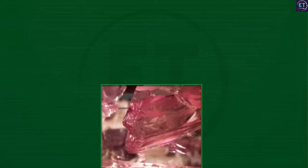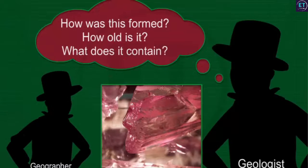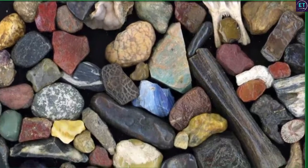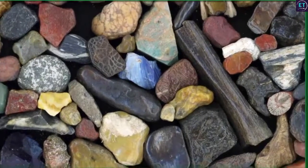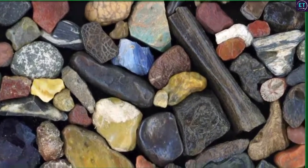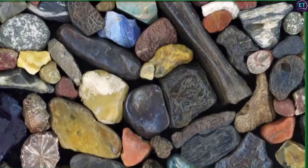Minerals are of interest to both geographers and geologists. While a geographer is concerned about the distribution and economic importance of a mineral, a geologist is more interested in the formation, age and composition of minerals. Geologists classify minerals based on their properties, which depend on the elements a mineral is made of and the chemical and physical conditions in which it was formed.